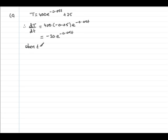So when little t equals 50, substitute it into this part here. And we get that d big T, d little t equals negative 20 times e to the minus 0.05 times 50.